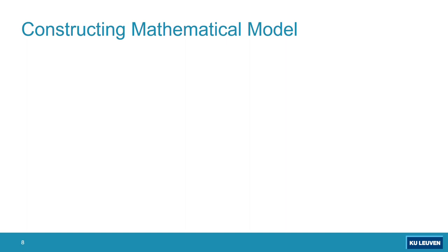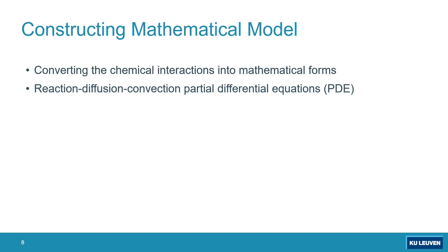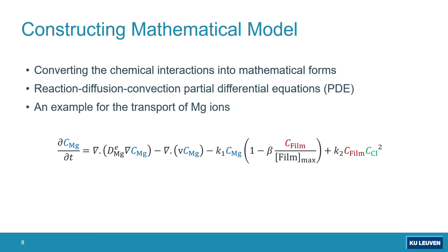In order to create the mathematical models, these chemistries are converted to mathematical forms. As I said, we have derived a set of reaction-diffusion-convection equations depending on the contributing chemistry that we want to capture. It can be like five to eight different PDEs at this moment.